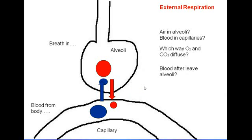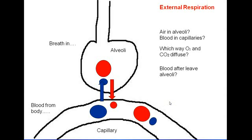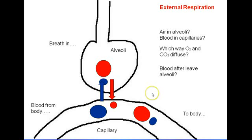So what will the blood look like after it passes the alveoli? It will have a high concentration of oxygen and a low concentration of CO2, because of this process of diffusion that occurred at the alveoli. That blood will then travel to the body — it will go to the left side of the heart first, and then be pumped out to the body.